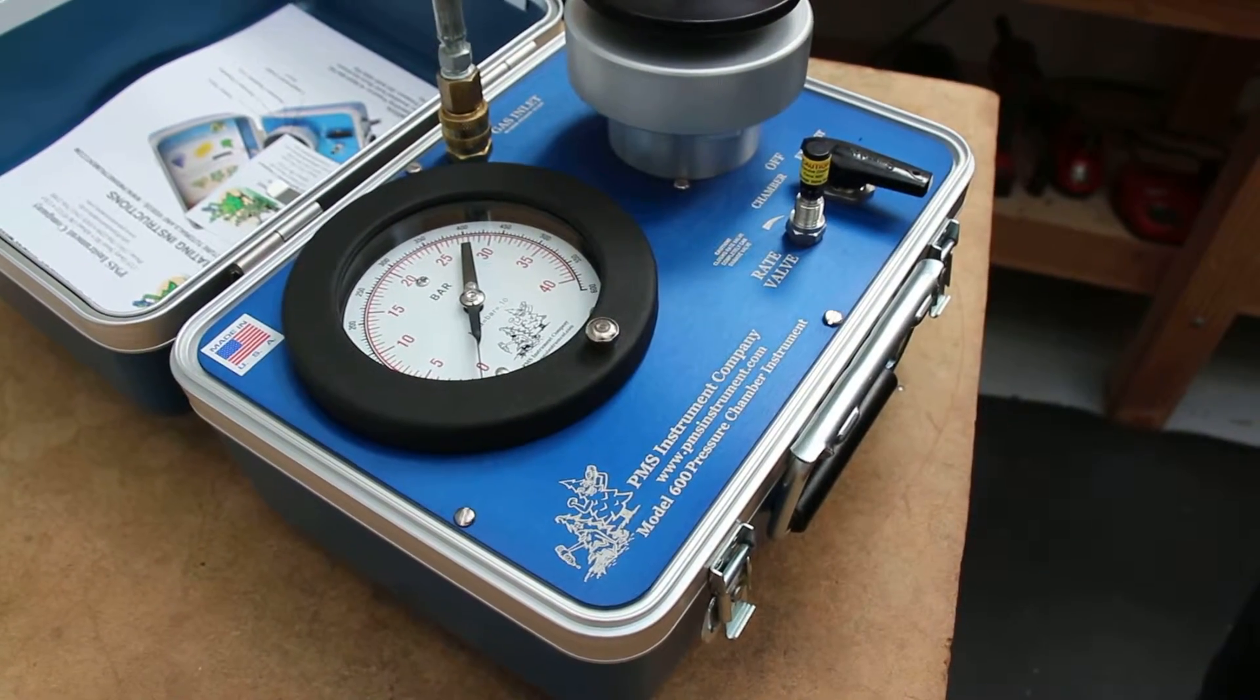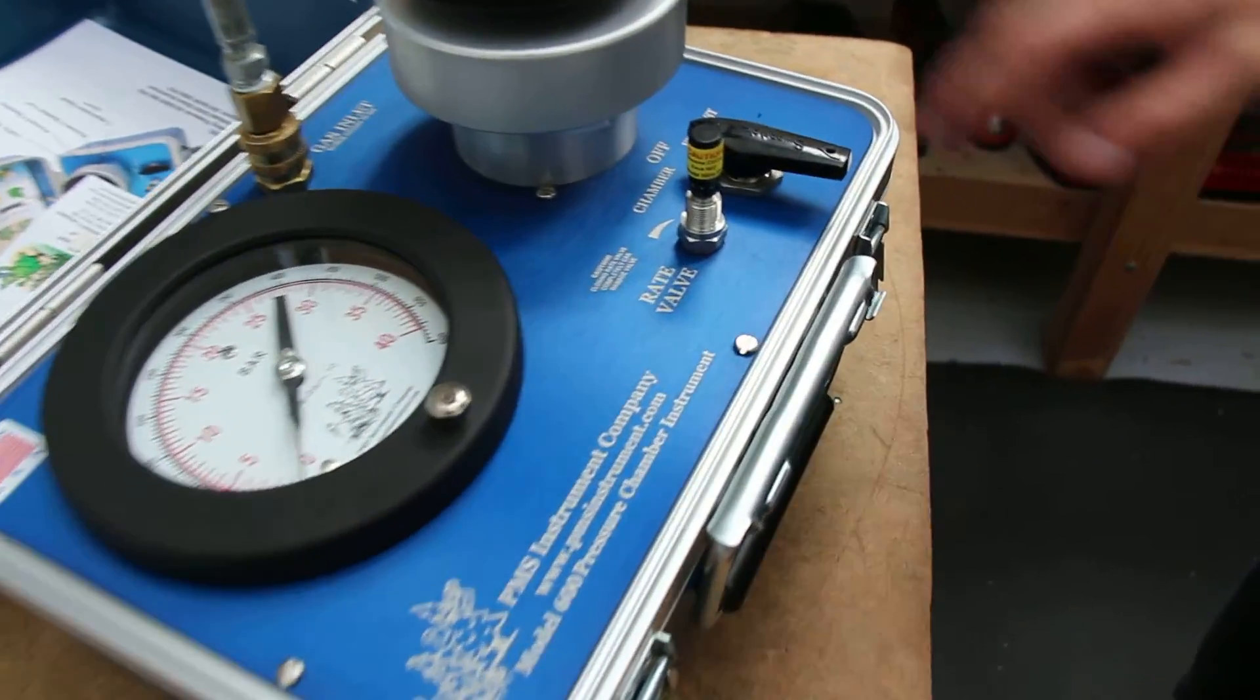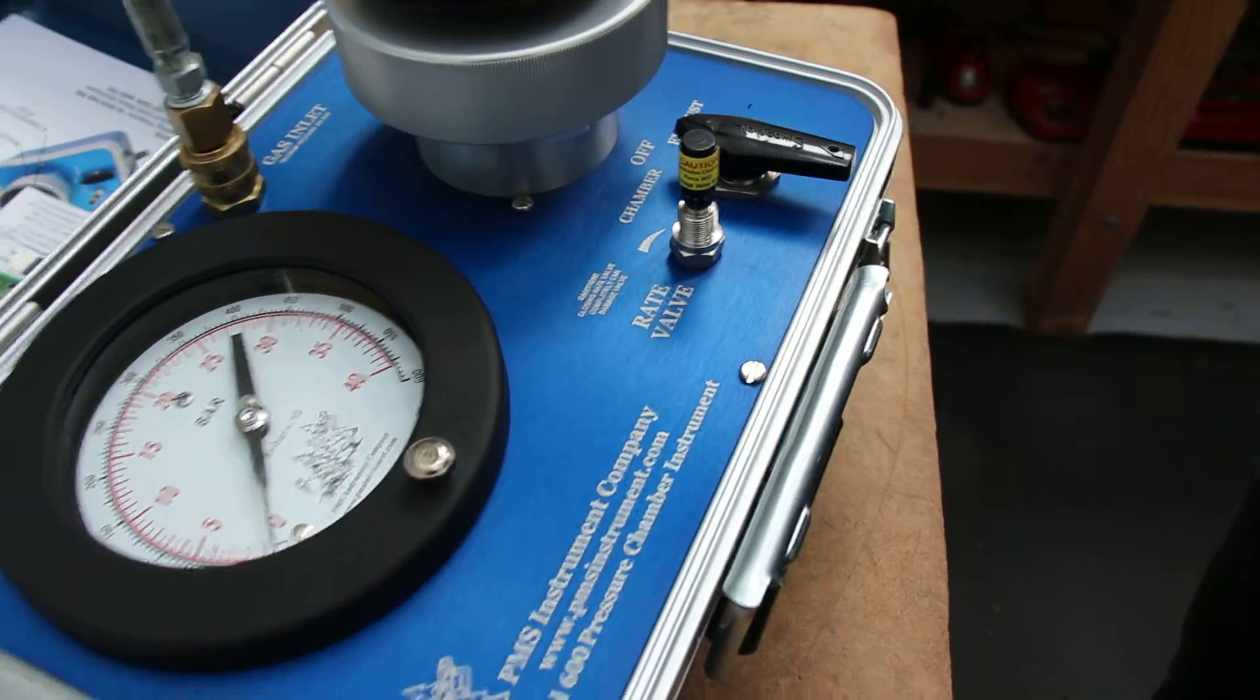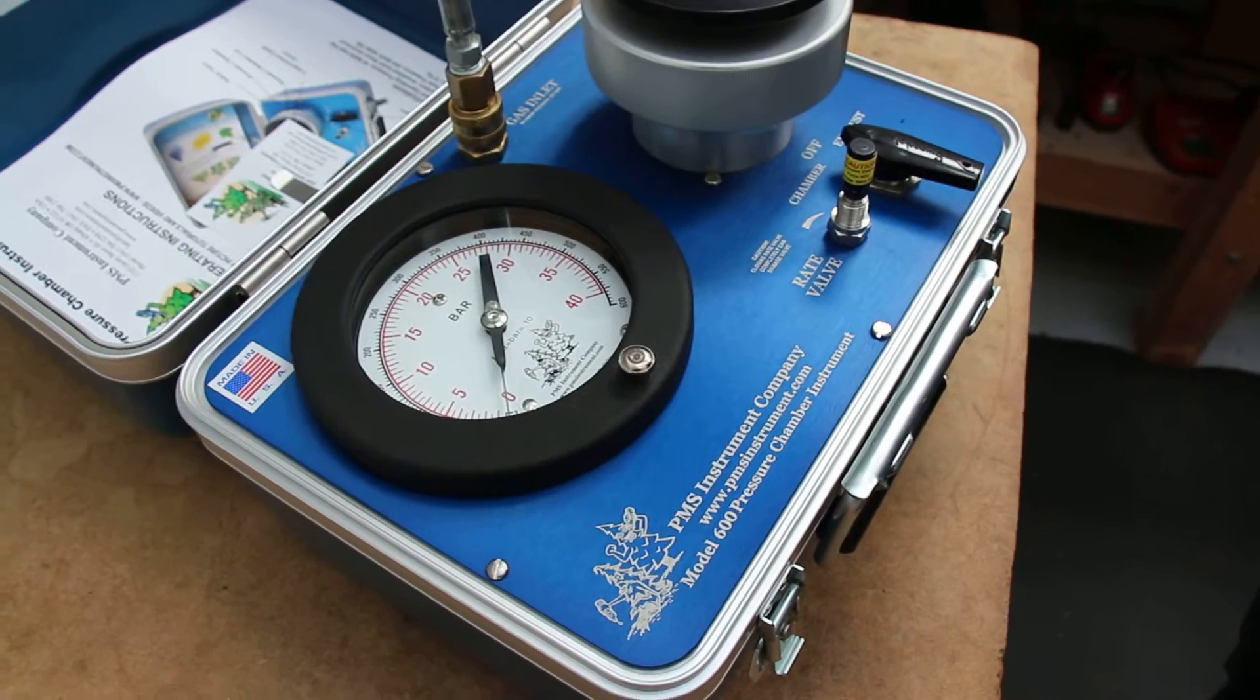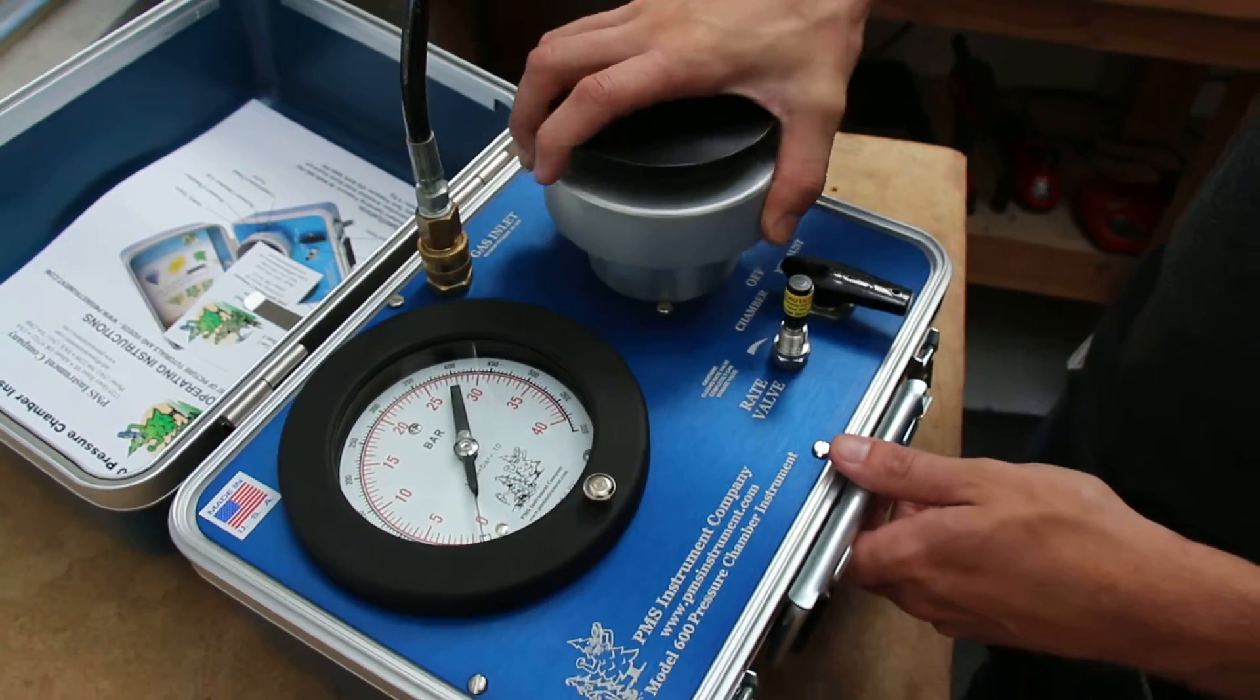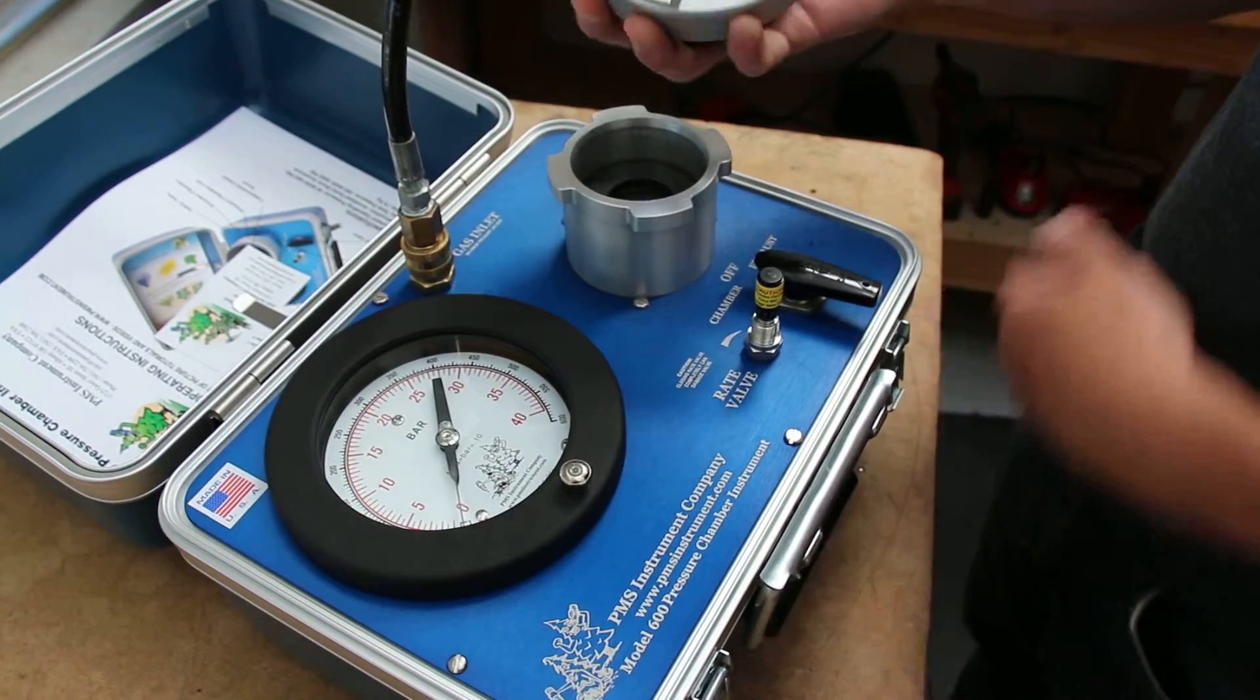This tutorial shows how to adjust the rate valve at a rate sufficient for taking water potential readings for agricultural purposes. First, we're going to open the chamber and plug up the chamber so that it's sealed.